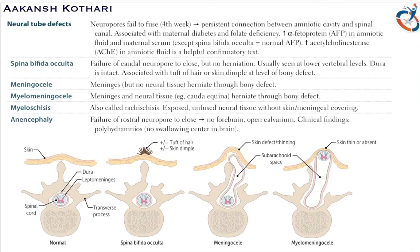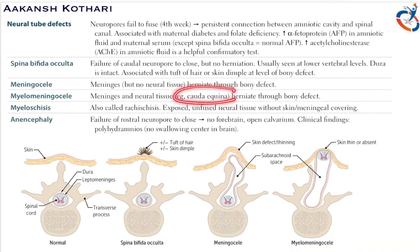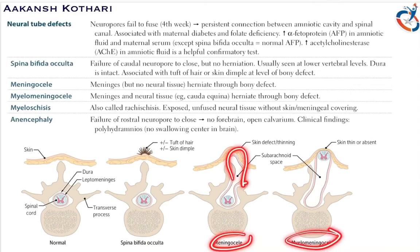In meningocele, the meninges herniate through the bony defect but the neural tissue remains intact. In myelomeningocele, both the meninges and the neural tissue — for example the cauda equina — herniate through the bony defect. So: in spina bifida occulta there is no herniation; in meningocele there is herniation of meninges only; in myelomeningocele there is herniation of both neural tissue and meninges.